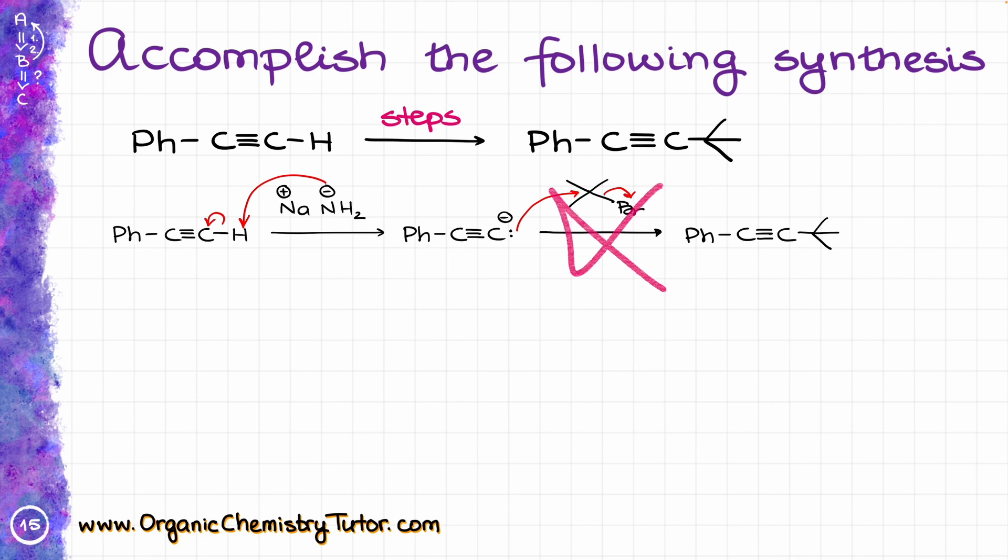I will remind you here that the SN2 reaction that we seemingly want to do in this case cannot work on the tertiary alkyl halide, and instead, the major product in this type of sequence would actually be the elimination reaction. So we would fail to accomplish the synthesis if we go this pathway, which means that we need to come up with something drastically different, because that's a dead end, it doesn't work.